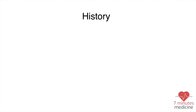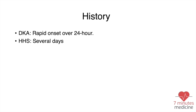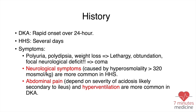For history taking, DKA has a rapid onset over 24 hours, while HHS may take several days. Symptoms include polyuria, polydipsia, weight loss, lethargy, obtundation, focal neurological deficit, and coma.